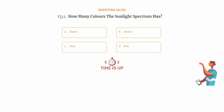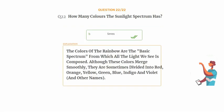The correct answer is Option B: 7. The colors of the rainbow are the basic spectrum from which all the light we see is composed. Although these colors merge smoothly, they are sometimes divided into red, orange, yellow, green, blue, indigo and violet, and other names.